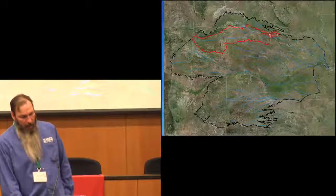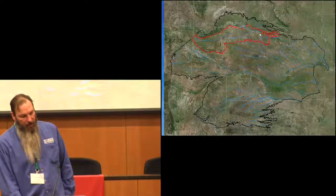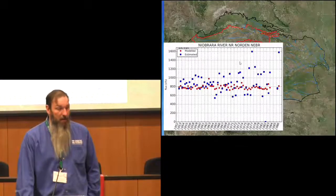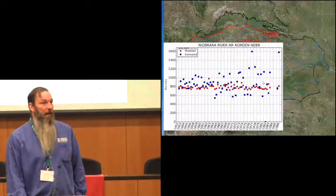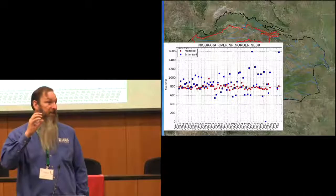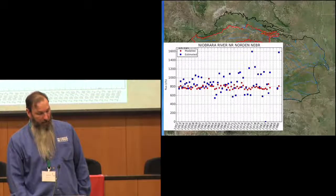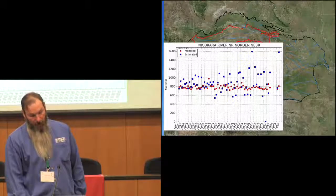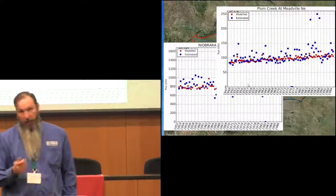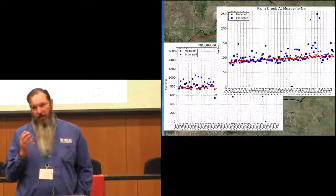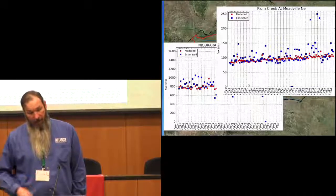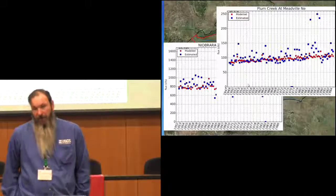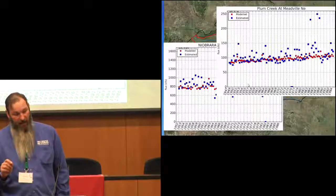For simulated stream flow, here is the Niobrara River Basin and Plum Creek at Meadville. For the Niobrara River at Norton, there is noise later in the record caused by reservoir operations, but the model simulates the pre-reservoir section in the same range as estimated base flow values and continues through the reservoir-affected period. For Plum Creek at Meadville — a very small tributary — the model reproduces a temporal trend starting under 100 CFS and increasing to over 100 CFS. Blues are estimated base flows; reds are what the model simulated — mostly in the same place.